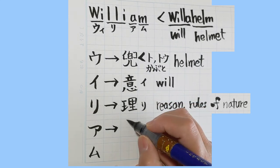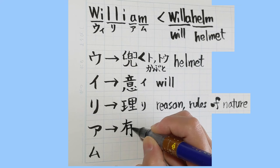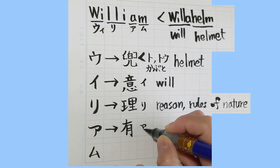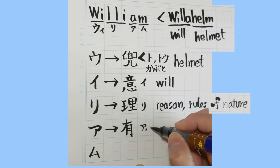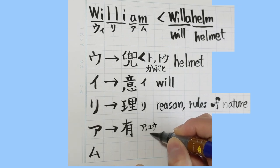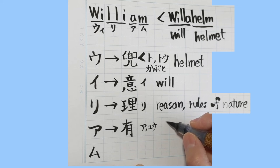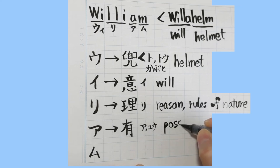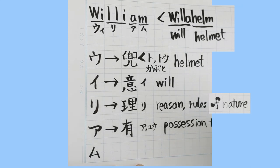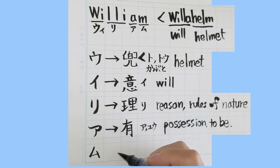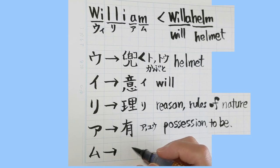Then next, the ア sound. How about this one? The rules of nature — this is ア. There are also meanings like 'to be,' 'they,' or position. It means position or 'to be.'